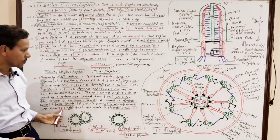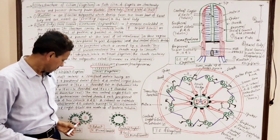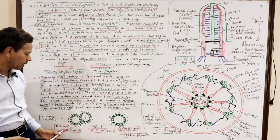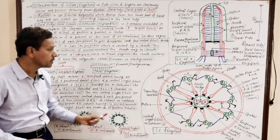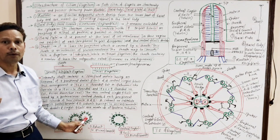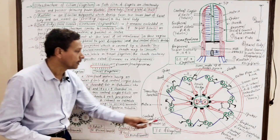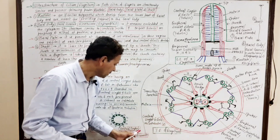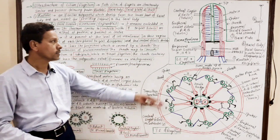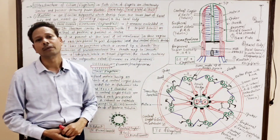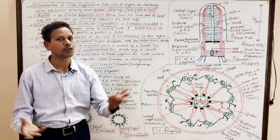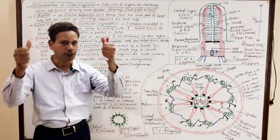The A subunit has 13 microfilaments, the B subunit has 10 globular proteins (10 microfilaments), and each central singlet has 13 microfilaments. This is all about the ultrastructure of cilium or flagellum. In the next lecture, we will discuss the centriole.